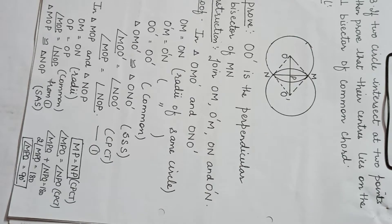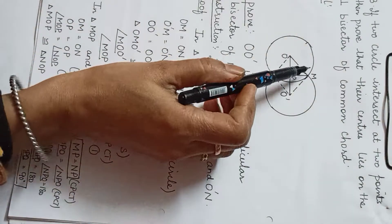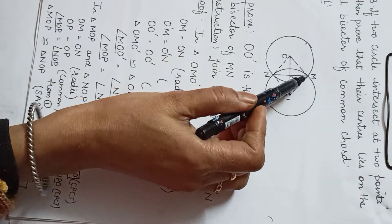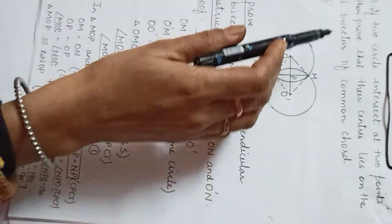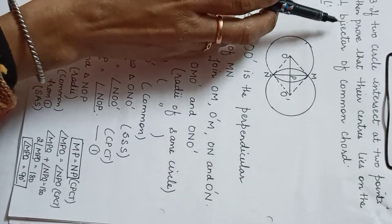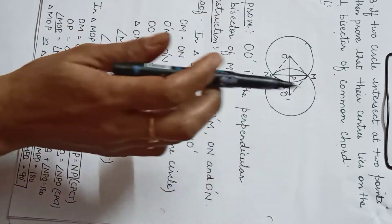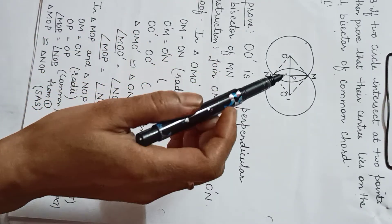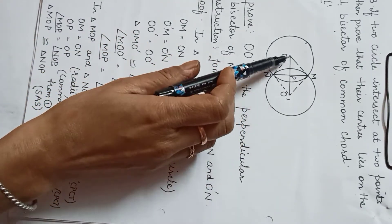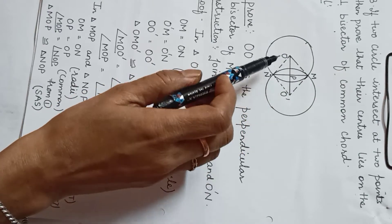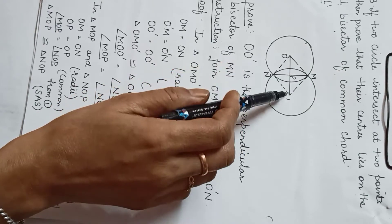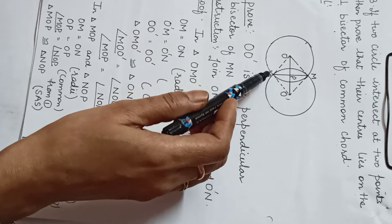Question number 3: If 2 circles intersect at 2 points M and N, then prove that their centers lie on the perpendicular bisector of the common chord. So we have to prove that their centers lie on the perpendicular bisector of MN, meaning we have to prove OO' is the perpendicular bisector of MN.